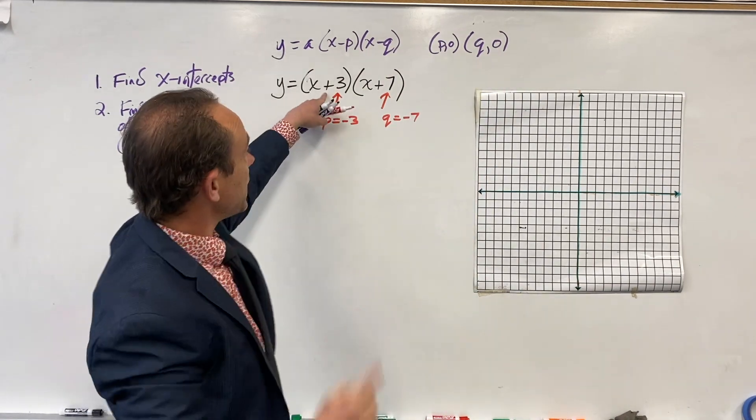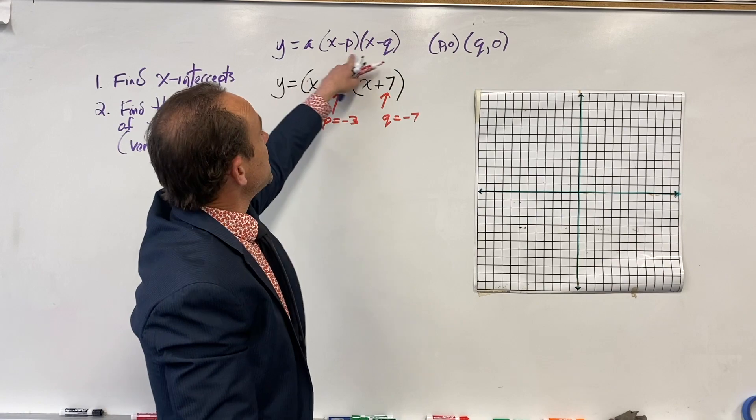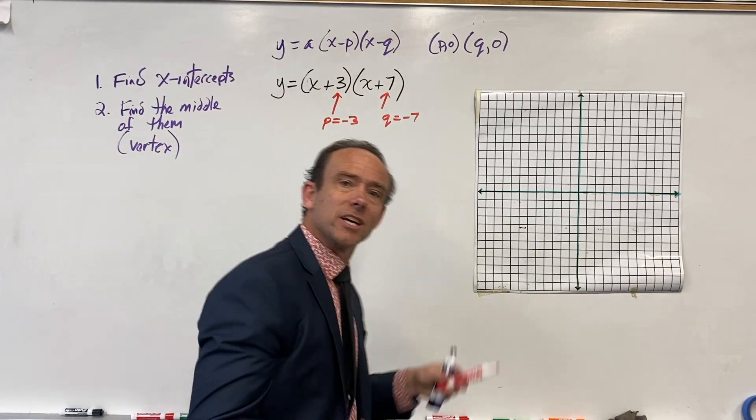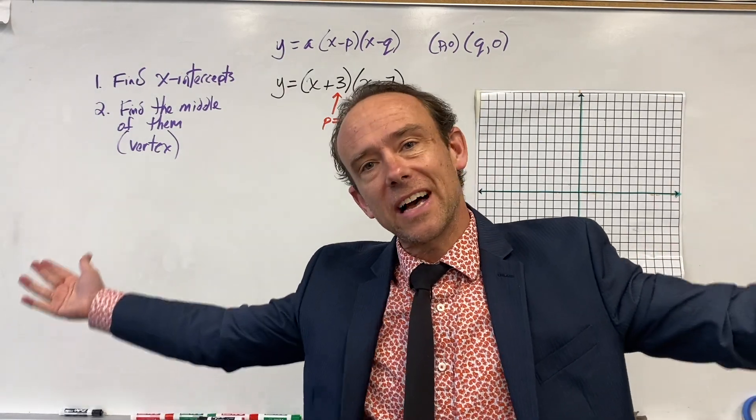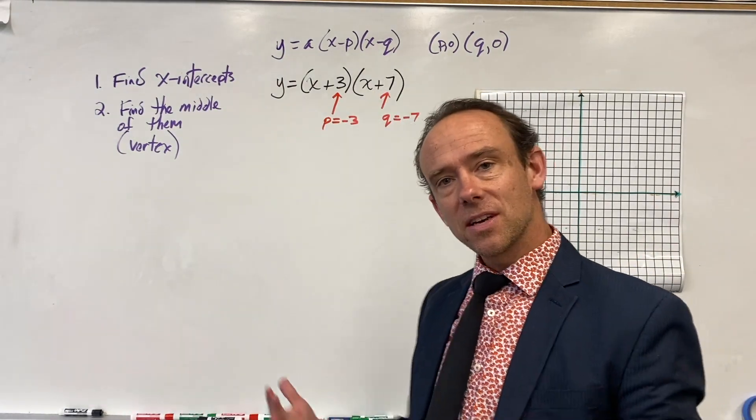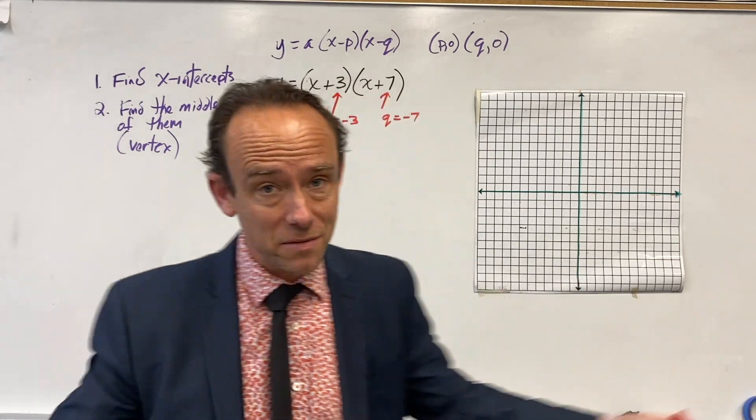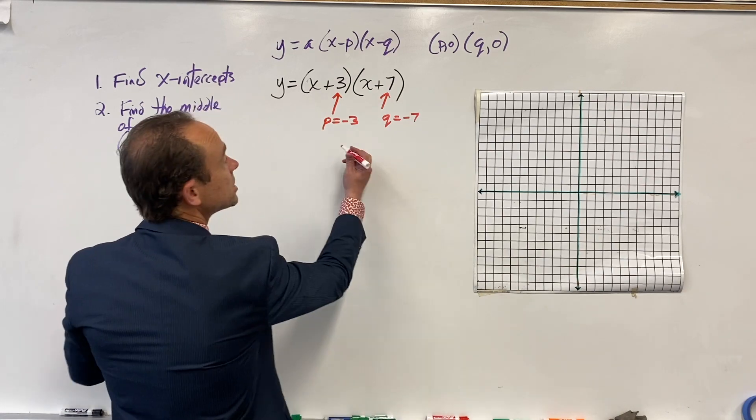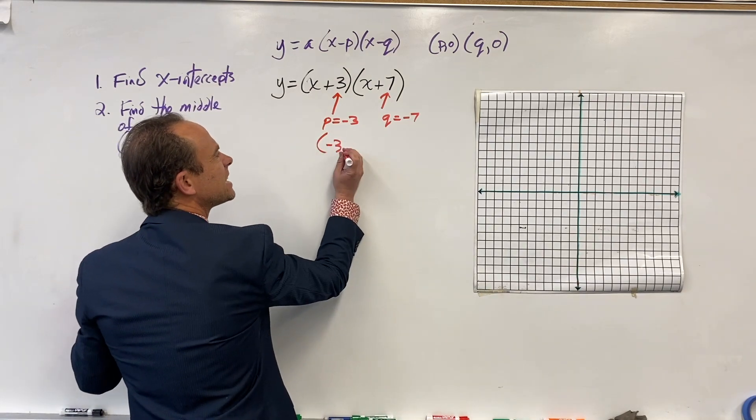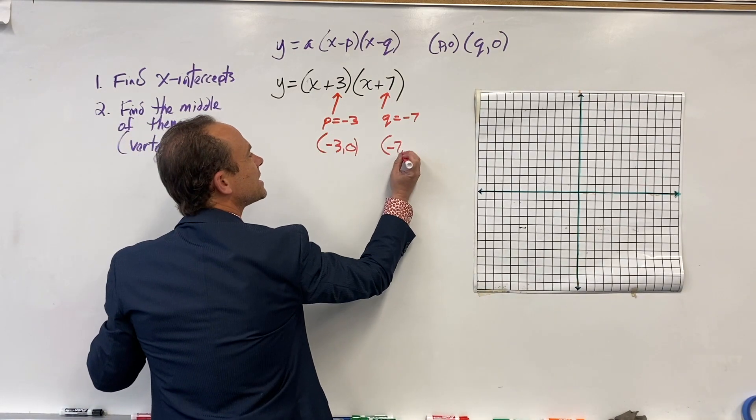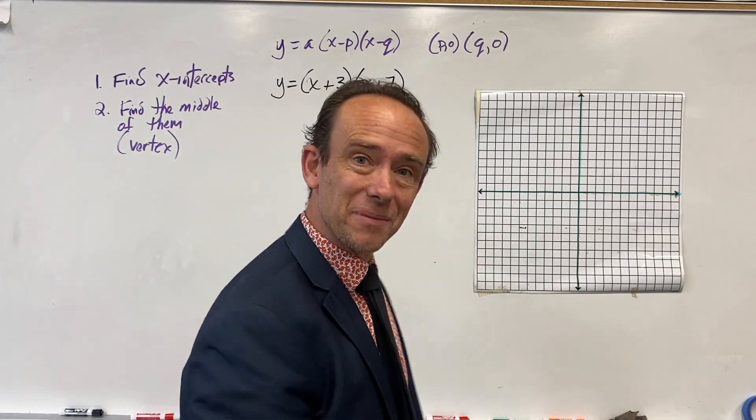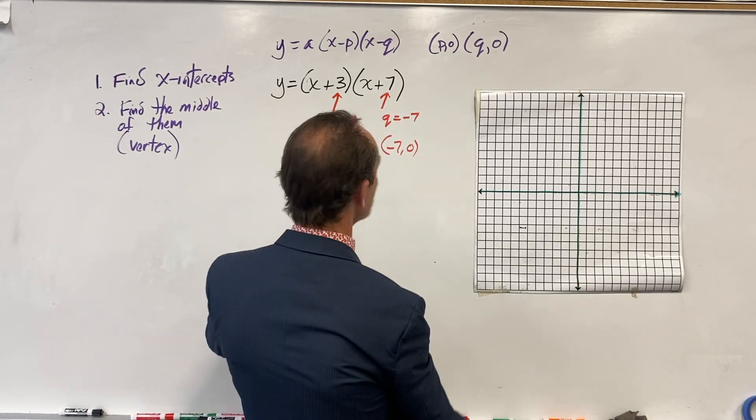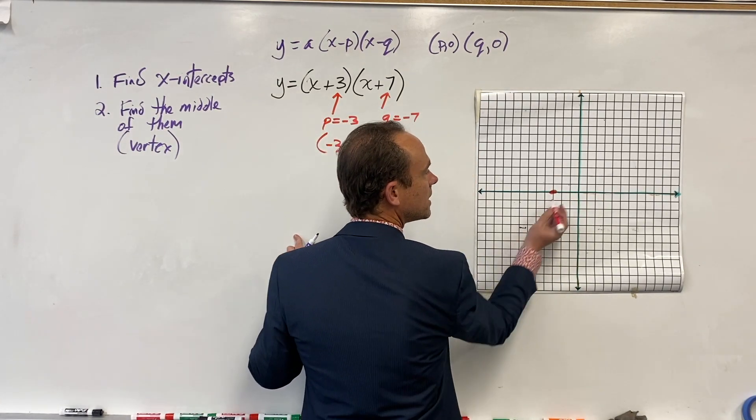Because we have pluses, our P and Q values must be negative, because when you subtract a negative you add. It's true in math and it's a beautiful analogy in life: when you subtract negativity you make yourself more positive. So these are our x-intercepts: (-3, 0) and (-7, 0). Let's graph them.